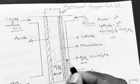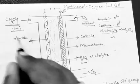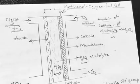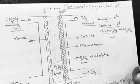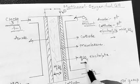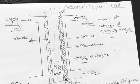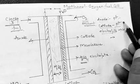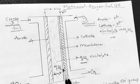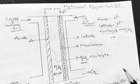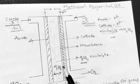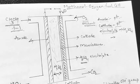This is a diagram of the methanol-oxygen fuel cell, where methanol is used as a fuel and oxygen is used as an oxidant. The electrolyte consists of H₂SO₄ (sulfuric acid). We have an anode and cathode compartment, both made up of platinum. Adjacent to the cathode, we have a membrane which helps prevent the diffusion of methanol at the cathode, since contact with the cathode could cause unwanted oxidation.